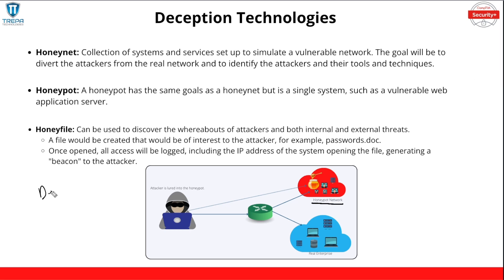A honey file is a single file used to discover the whereabouts of an attacker — covering both internal and external threats. A quick example: you create a file titled 'passwords.doc' meant for the IT team, and if someone from sales or accounting tries to open it, that may lead you to believe they're trying to gather sensitive information they shouldn't have access to, helping you discover insider threats. The key thing about a honey file is it must beacon to you once opened — logging who opened it, the IP address, computer name, and username.